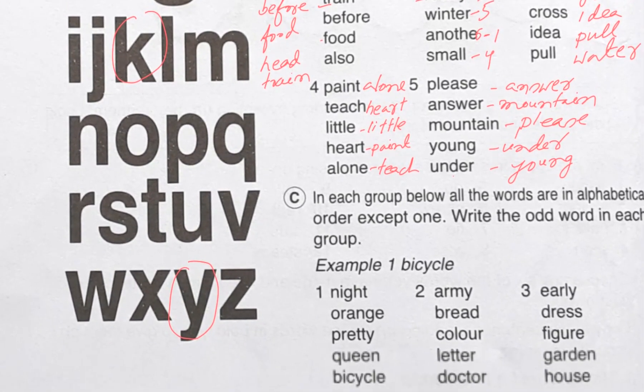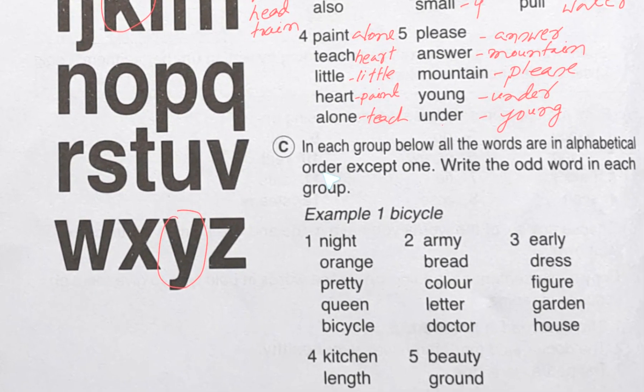Let's do next one, C number. What is written here? In each group below, all the words are in alphabetical order except one. Write the odd word in each group. Example is given: first one, night, orange - after M N O, this one is not alphabetical. Next one: army, bread, color, letter, doctor. After C it will be D - this one is not alphabetically arranged. Three number: early, dress, figure, garden, house. E F G H - this one is not alphabetically arranged.